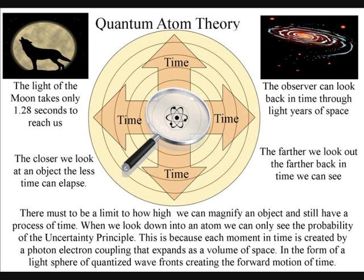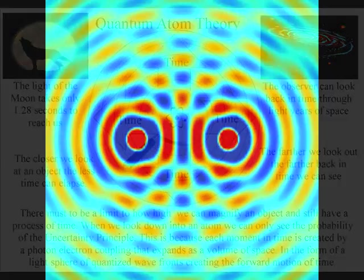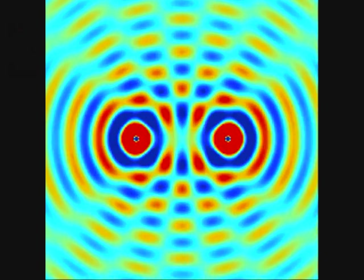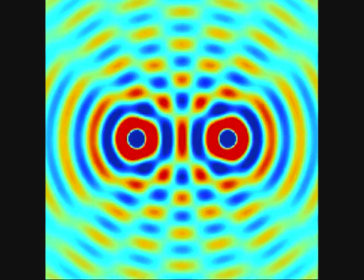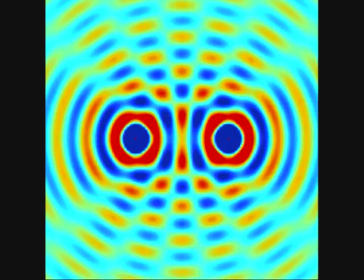This process of looking back in time can be put in reverse, and the closer we look at an object, the less time will elapse. When we look down into an atom, we can see time-dependent quantum mechanics, when the atoms bond together, forming interference patterns of their own.